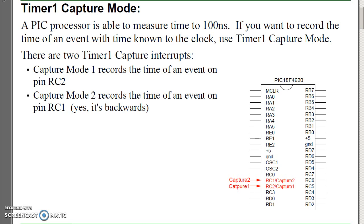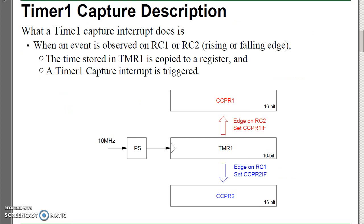It's a little bit backwards. Capture Mode 2 records the time on pin 1. Capture Mode 1 records the time on port C pin 2. What happens is when the event occurs — like a rising edge on port C pin 1 or 2 — the value of Timer 1 is copied to a register called Capture 1 or Capture 2.